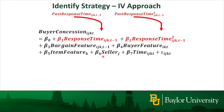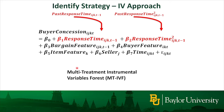Therefore, to study heterogeneous treatment effects, traditional parametric methods can quite easily run into problems. And therefore, we developed our own machine learning method. We call it Multiple-Treatment Instrumental Variable Forest, or MTIVF for short. I want to emphasize that although in our empirical setting there are only two treatments, this method can apply to more than two treatments.